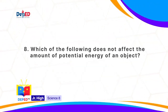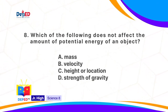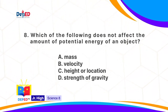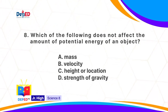Which of the following does not affect the amount of potential energy of an object? A. Mass. B. Velocity. C. Height or location. Or D. Strength of gravity. The correct answer is B: velocity.